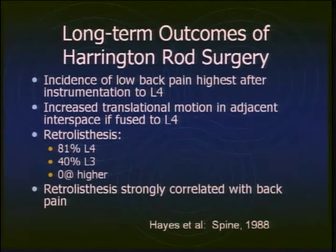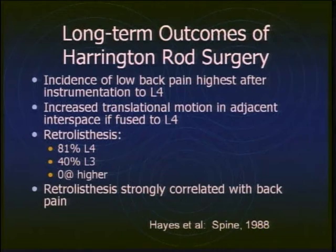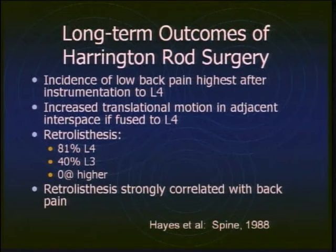There are many studies looking at long-term outcomes of Harrington rod surgery, which was all we had — a big innovation at the time. The literature supports that the incidence of low back pain is highest in patients instrumented to L4 or lower. These patients also show a lot of translational motion at the segment below the fusion. Those fused to L4 have as high as an 80% incidence of retrolisthesis; at L3, it's less, and above that, it's not as much of a problem.